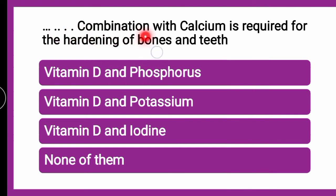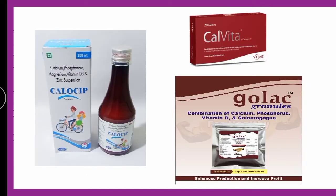Next question: Dash combination with Calcium is required for hardening of bones and teeth. Which combination along with Calcium is required for healthy bones and teeth? Whether it is Vitamin D and Phosphorus, Vitamin D and Potassium, Vitamin D and Iodine, or none of the given combinations. Looking at the combinations existing with Calcium in various dosage forms — suspension, tablets, and granules — the combination is Calcium with Phosphorus and Vitamin D.